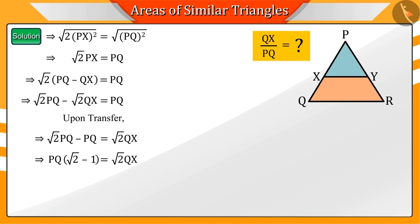On solving this, we can say that the value of QX by PQ is obtained as the square root of 2 minus 1 upon the square root of 2.